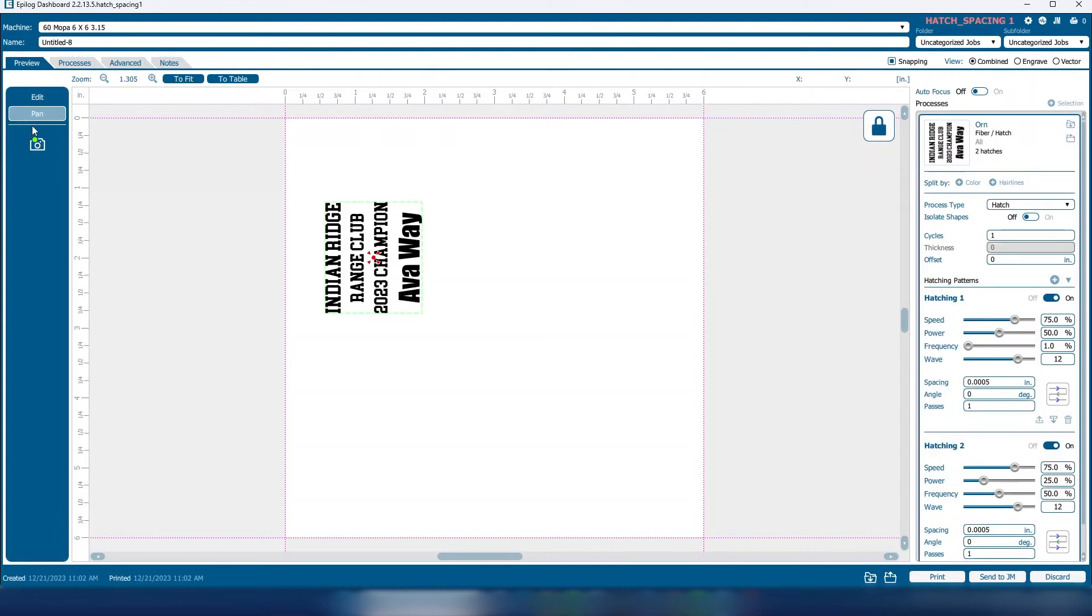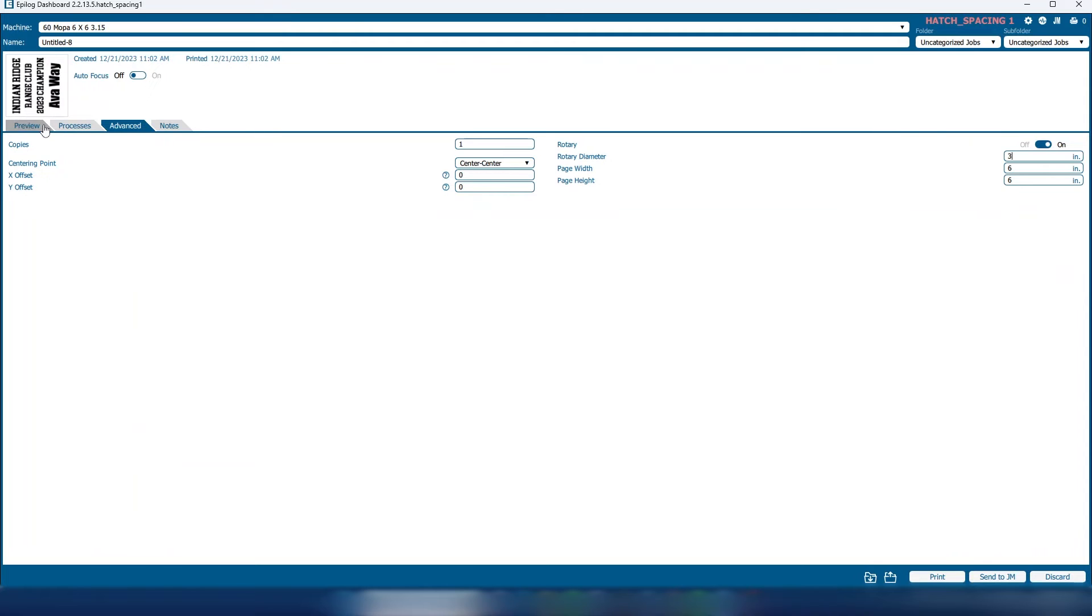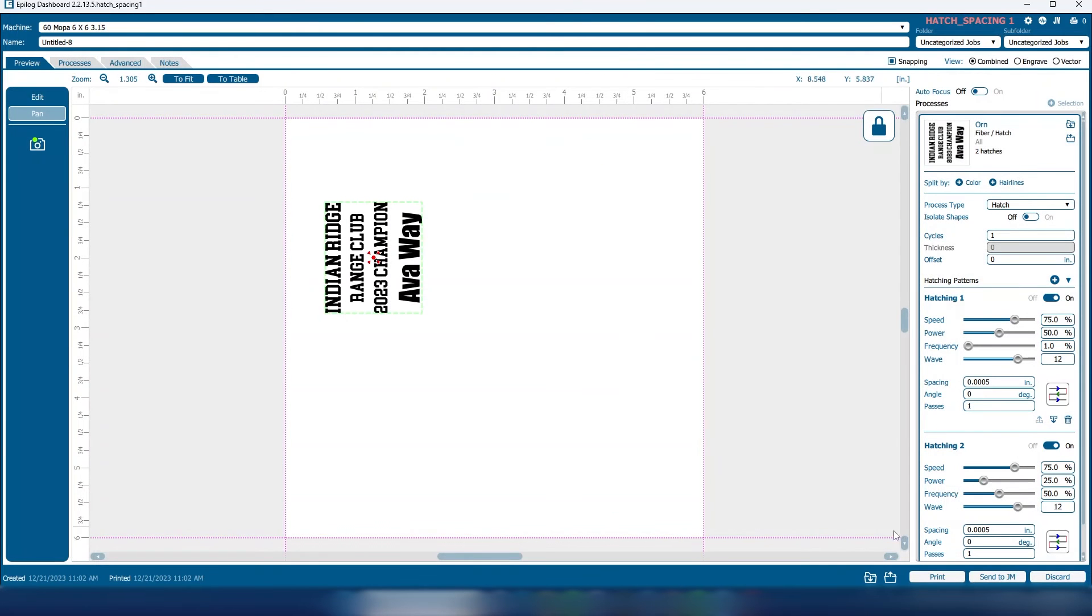You'll notice that when we turn the rotary on, it takes away camera view. It's really handy to use the center engraving feature like we just set here when you're doing any sort of rotary work. And then we'll need to, again, select our location at the machine.